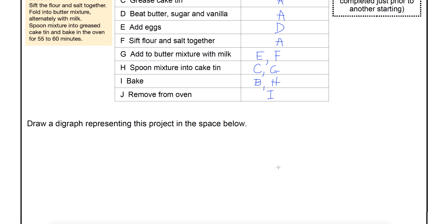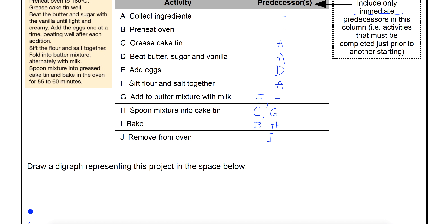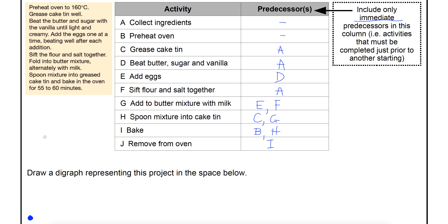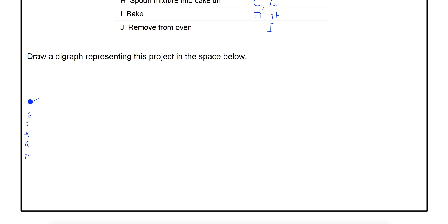We're going to have a start vertex — start at the far left of your page and mark a vertex there. What you're going to do is look at your table and find anything that doesn't have a predecessor. A and B don't have a predecessor, so A and B are going to come from the starting vertex. I'll draw A going one way and B going another. I haven't put arrows on yet because I might need to change things.